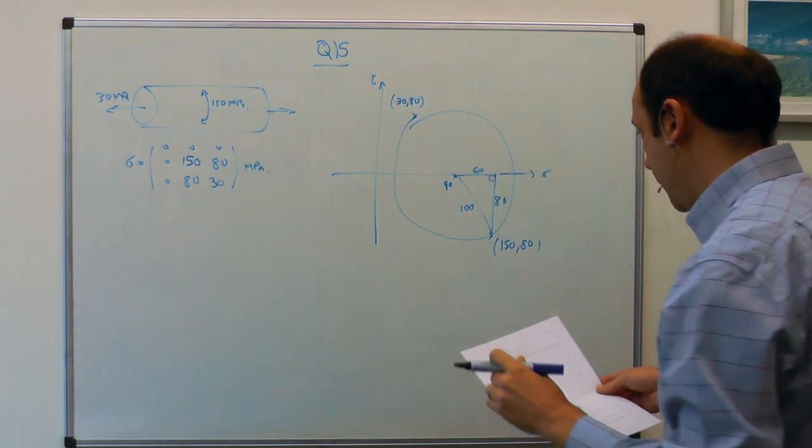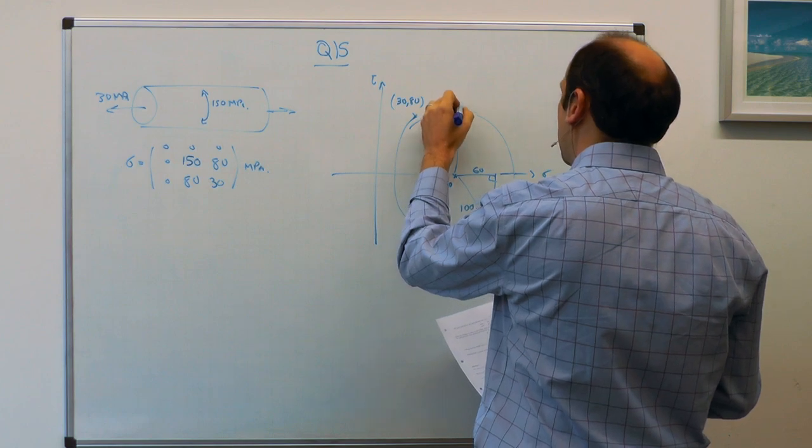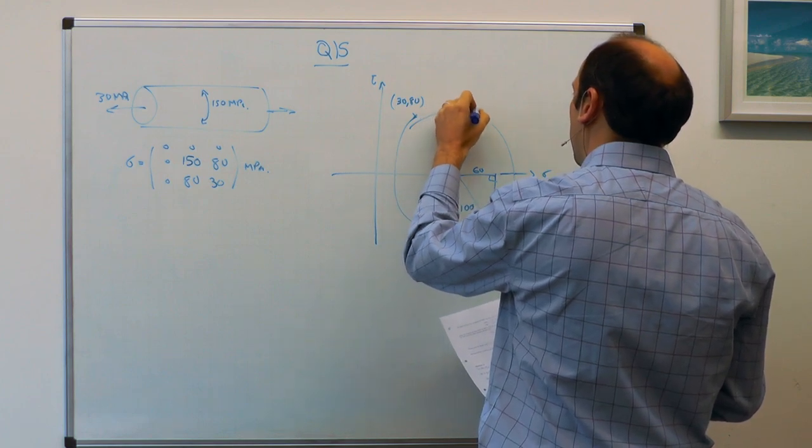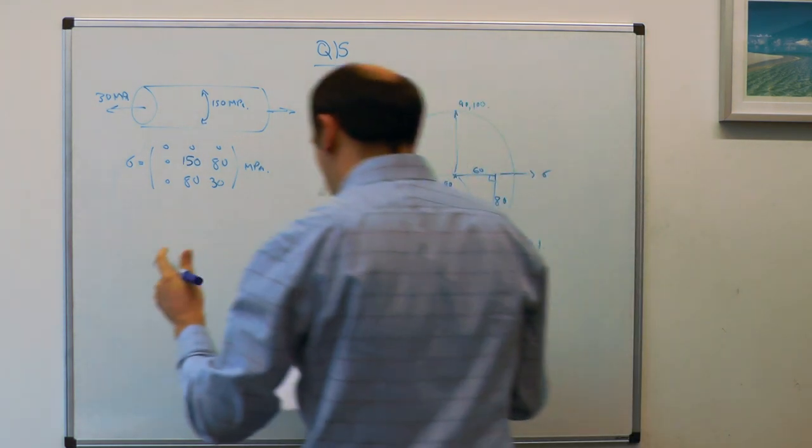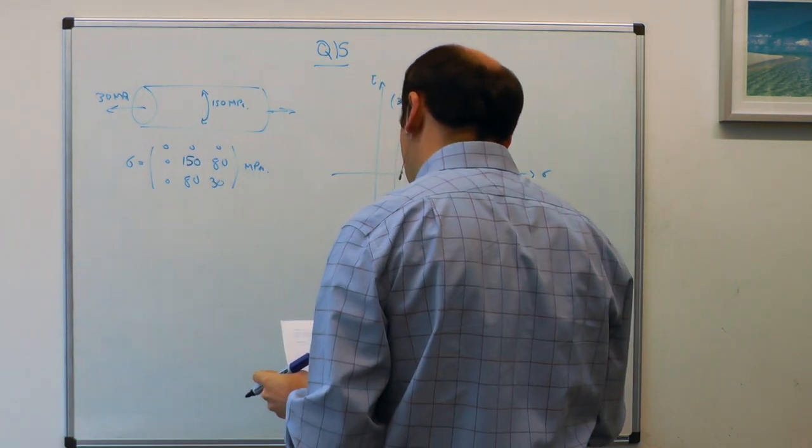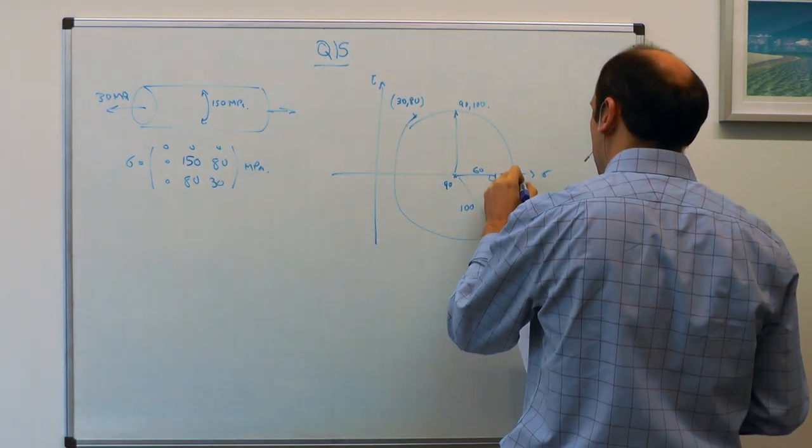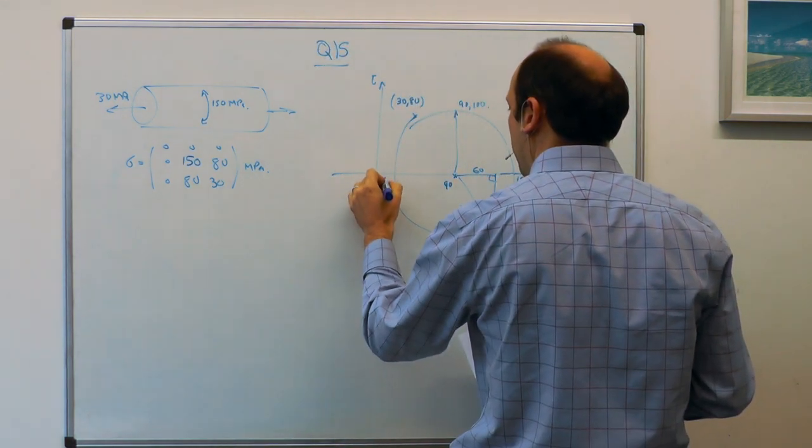And the radius is therefore 100 MPa, so the maximum shear stress is 190, 100. So the question asked us to find the principal stresses. So the principal stresses are 90 plus minus 100, so that's 190 and minus 10.